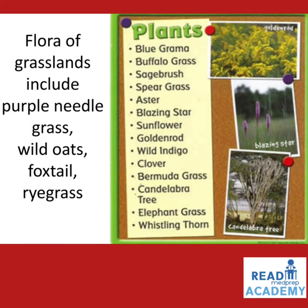The flora of grasslands includes purple needle grass, wild oats, foxtail, and ryegrass. Other plants include blue grama, buffalo grass, sagebrush, spear grass, aster, blazing star, sunflower, golden rod, wild indigo, clover, bermuda grass, candelabra tree, elephant grass, and whistling thorn.